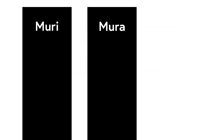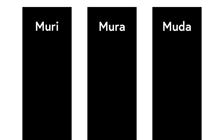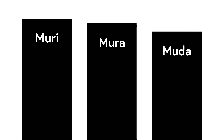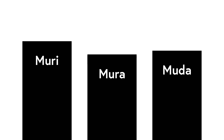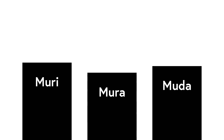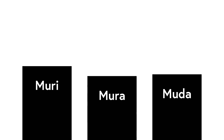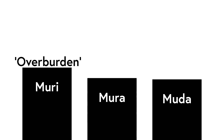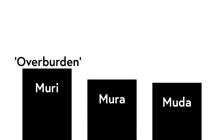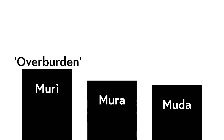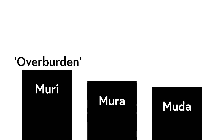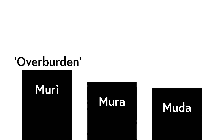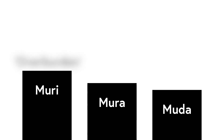There are three enemies of flow: Muri, Mura, and Muda. To improve flow, the three should be reduced or eliminated. Most critically, Muri or overburden must be avoided. When machines, people or infrastructure are overloaded, flow breaks.